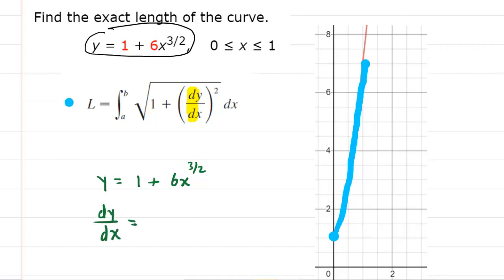Then we'll do the derivative with respect to x. So dy/dx equals the derivative of one is zero. Then we use the power rule. Multiply the power by the coefficient: six times three halves gives us nine x. Then subtract one from the exponent and you get x to the one half.